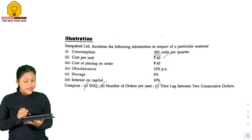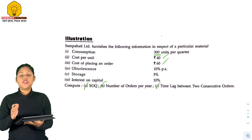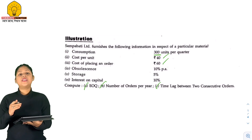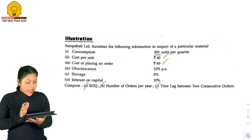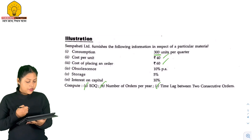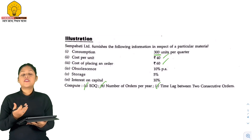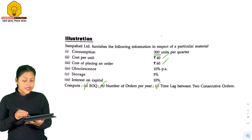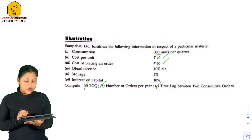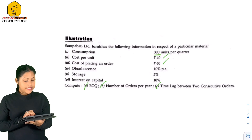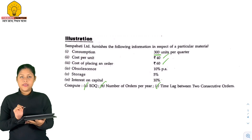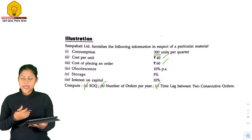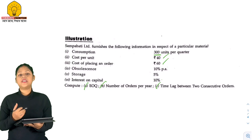The cost of placing an order is Rs.60. If the order is placed, the cost is 60 — this is how many expenses there are. Obsolescence is 10% per annum, storage is 5%, interest on capital is 10%. These are the holding cost components. First, we have calculated EOQ.